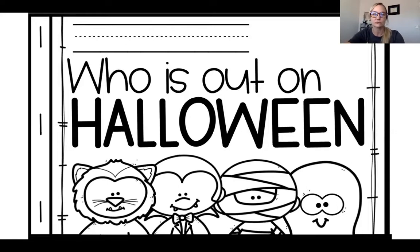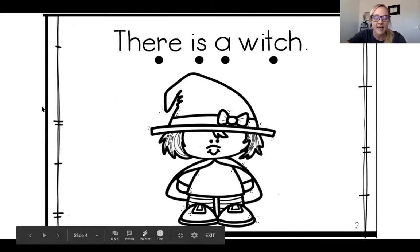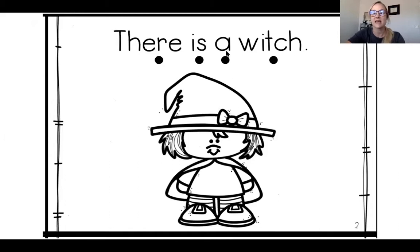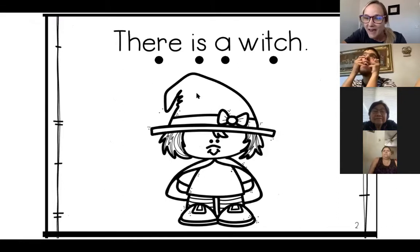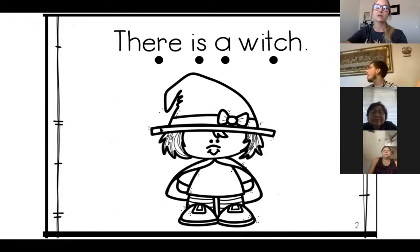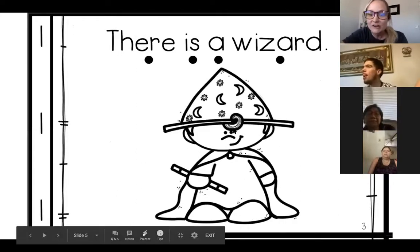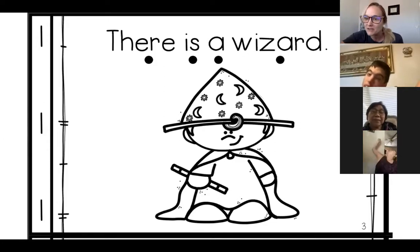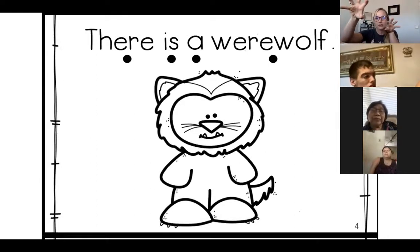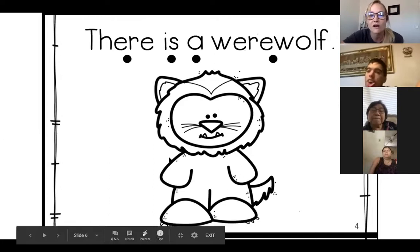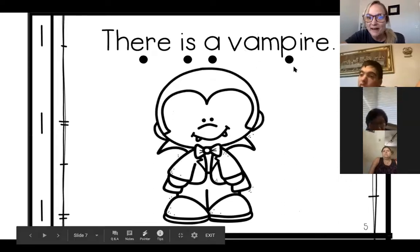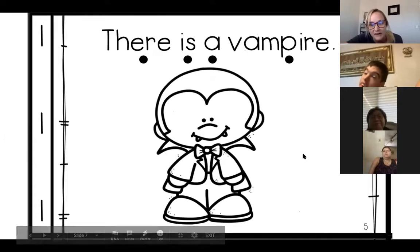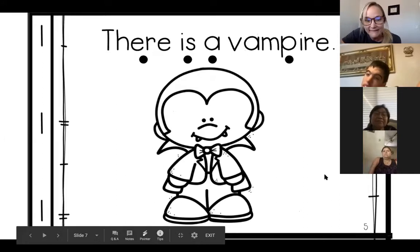Who is out on Halloween? You see here there is a witch. Some people will be dressing up as a witch for Halloween — a witch wears a big hat on their head. There is a wizard. They also have a hat on their head, but they have a wand in their hands for their magic spells. Some people may dress up as a wizard. There is a werewolf — a big scary werewolf. And then there's a vampire, some people dress up as vampires on Halloween.